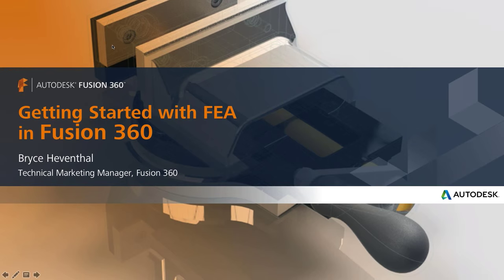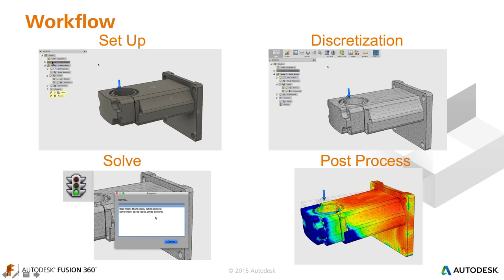Welcome to getting started with finite element analysis in Fusion 360. There are main steps performed while completing an FEA analysis: first, we set up the analysis; then we do discretization, better known as meshing; then solve our study. Finally, we analyze the results as we post-process the results created from the FEA study. Depending on which stage you're in, you might be reiterating over and over, converging on a certain stress value or safety factor.